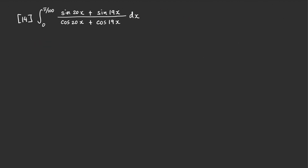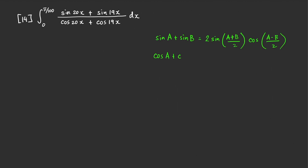Now let's move to the second problem. For this integral, we need to use sum-to-product identities for sine and cosine. Recall those identities: sine of a plus sine of b equals 2 times sine of (a+b)/2 times cosine of (a−b)/2. And for the sum of cosines, cosine of a plus cosine of b equals 2 times cosine of (a+b)/2 times cosine of (a−b)/2.